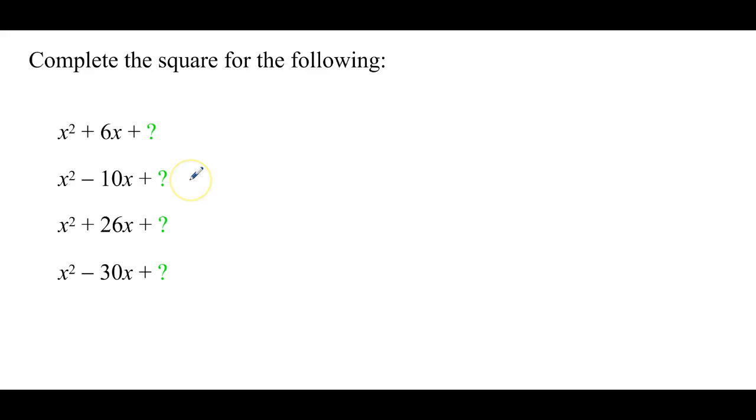So you can look on the internet, any complete the square worksheet, you'll get problems like this. So here we go, completing the square. Here's how it works. x squared plus 6x plus what number makes a perfect square? Well, half of 6 is 3, 3 squared is 9. So this guy here is x plus 3, quantity squared. Those two terms there are equivalent. They say the exact same thing.